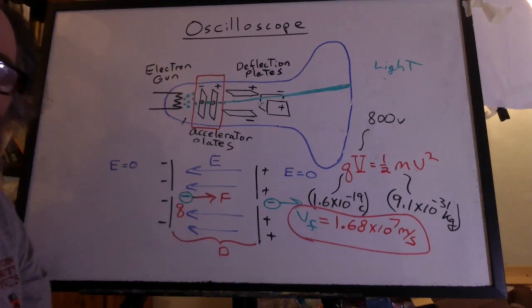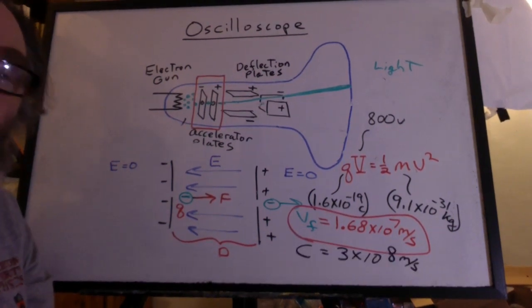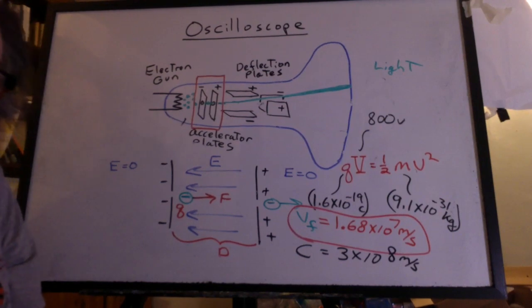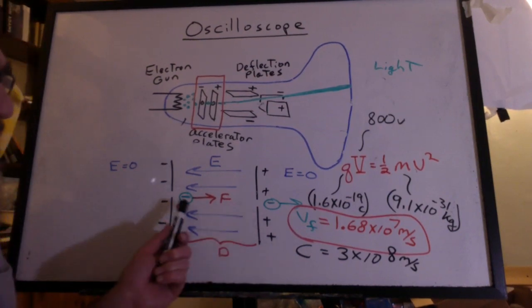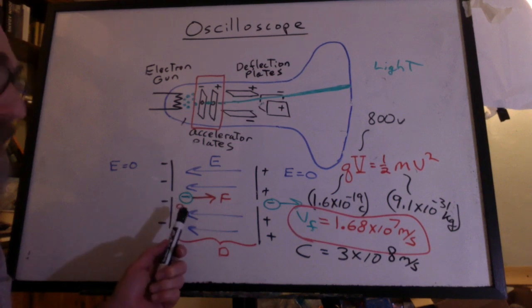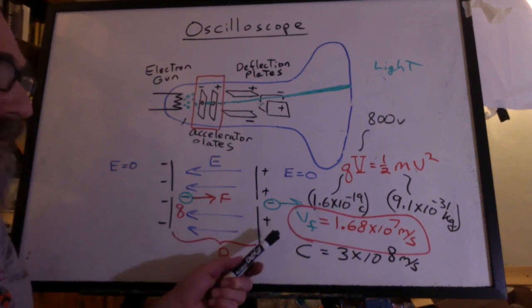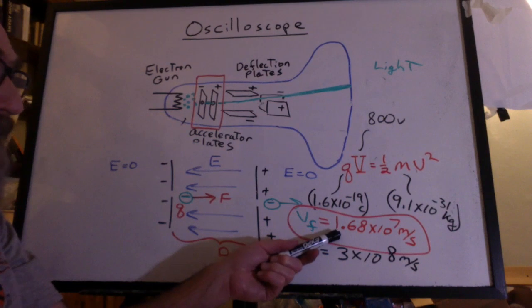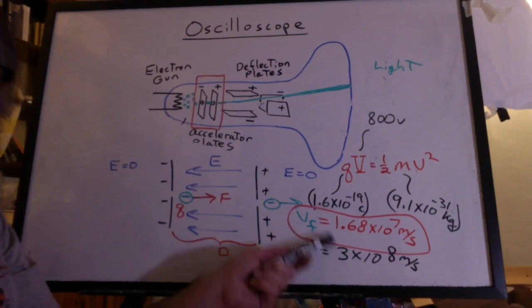Now what can we compare that to? How about the speed of light? 3 times 10 to the 8th meters per second. Yeah, those little electrons have very little mass. So that's why they accelerate so quickly. And we have a velocity that's in the vicinity of 10% of the speed of light.